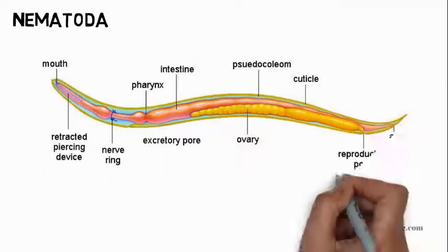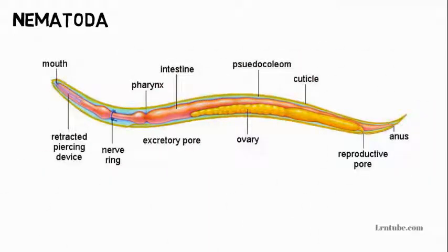Nematoda: They have round and cylindrical bodies. They lack a body cavity. They are bilaterally symmetrical. They can be parasites or free-living. Their body is made up of three layers. Some are hermaphrodites while others reproduce sexually. Examples: roundworm, hookworm, guinea worm, threadworm, and filarial worm.